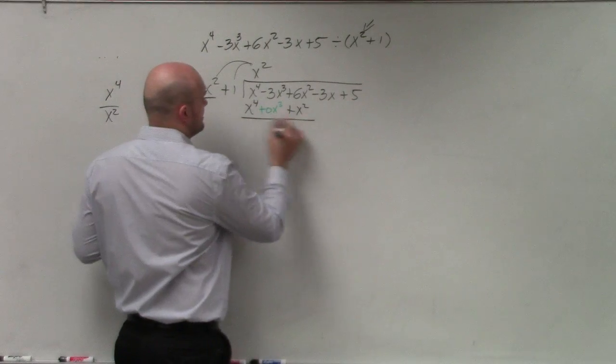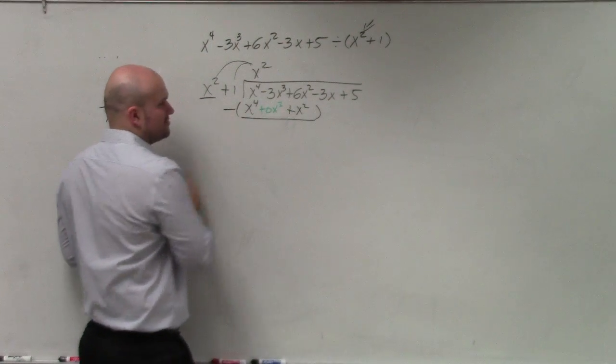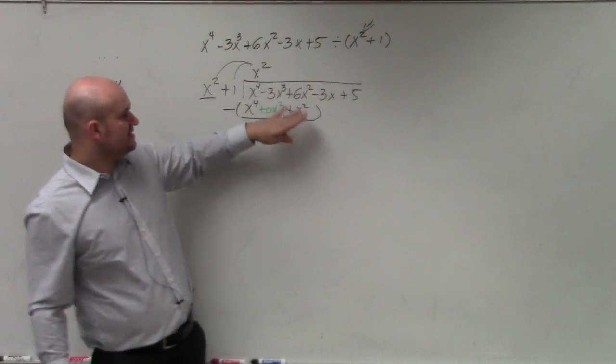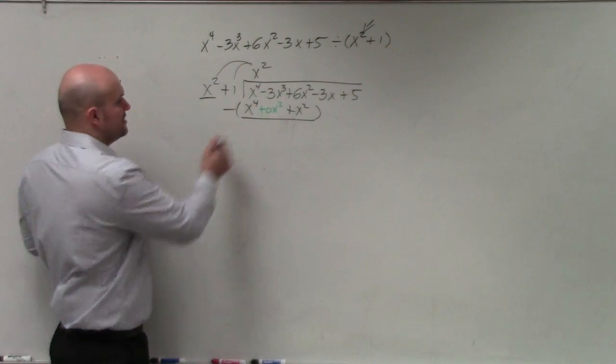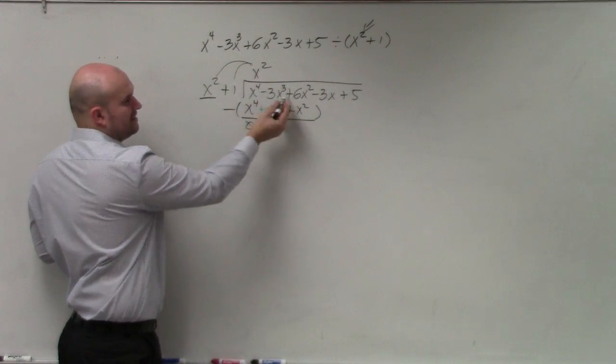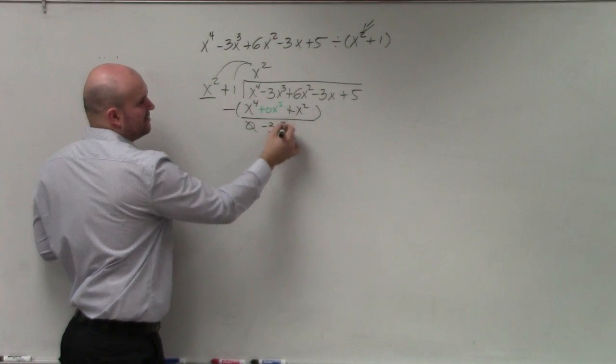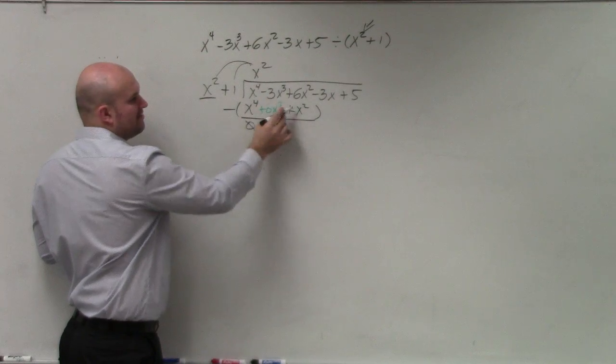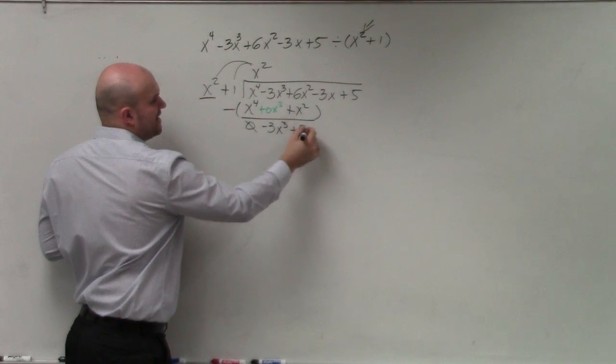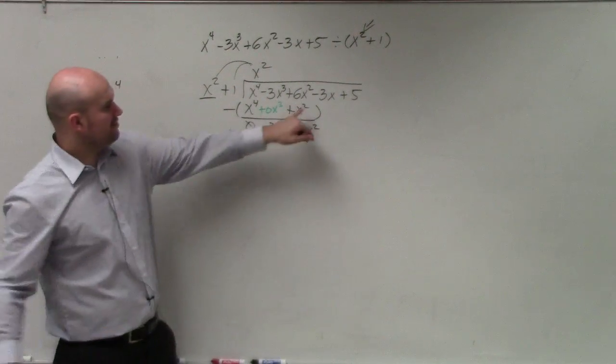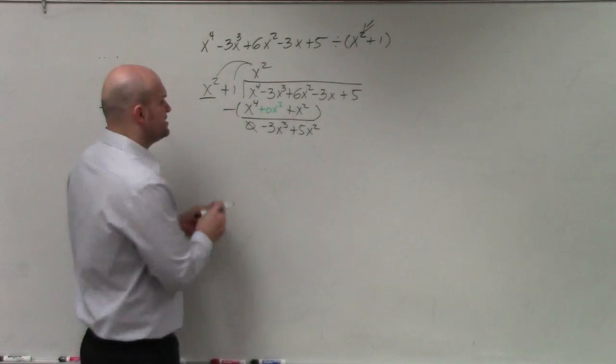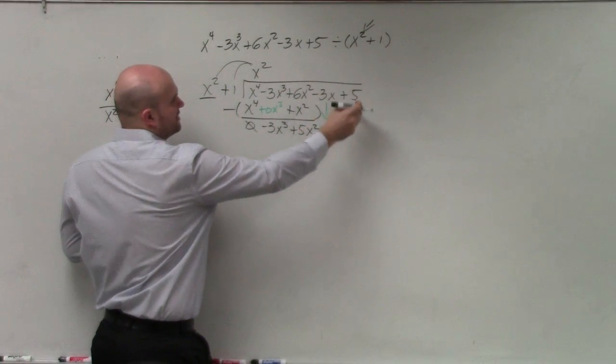Then the last step is you're going to subtract the rows. Make sure you put them in parentheses because you've got to subtract both of these values. So you have x to the fourth minus x to the fourth is 0. Negative 3 minus 0, which you just realize is really just bringing it down. And then you have 6x squared minus x squared, which is a positive 5x squared. You could put 0s in for here or you can just realize that these are both going to come down as well.